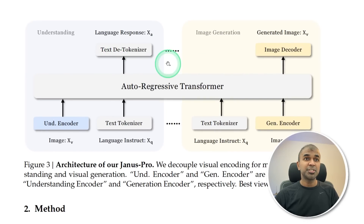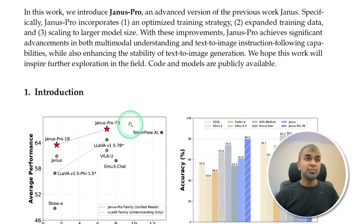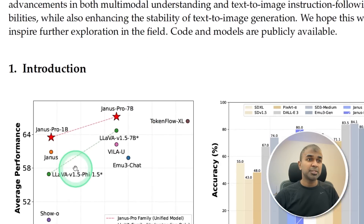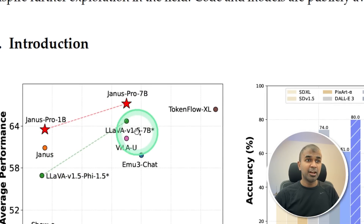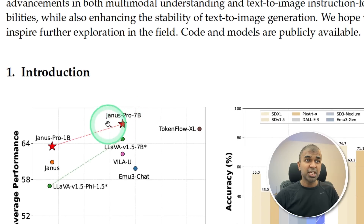It's really good to see both image understanding and image generation in one model. When you look at a previous model such as LLaVA, it can only understand images but not generate them — but Janus Pro 7B can generate images as well.